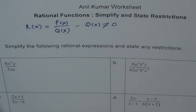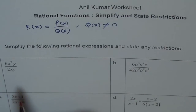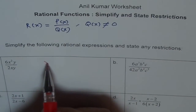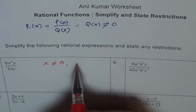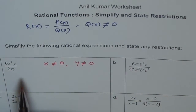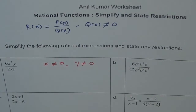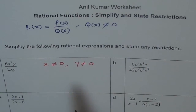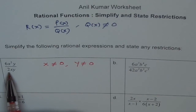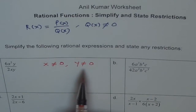Now first, when you look at this polynomial, what could be the restrictions? Restrictions could be x and y — there are two variables in the denominator. So we have x cannot be equal to zero and y cannot be equal to zero, because that will make our denominator zero. Any term which can make the denominator zero is a restriction for us. So none of them can be zero.